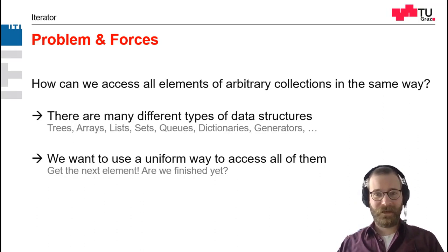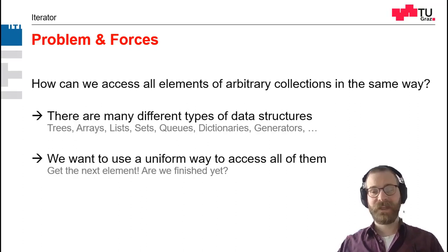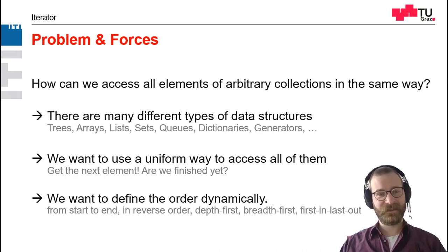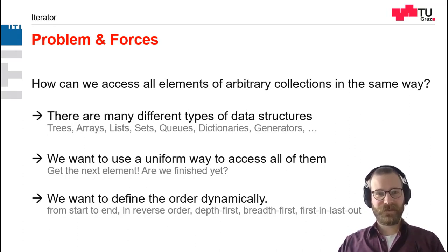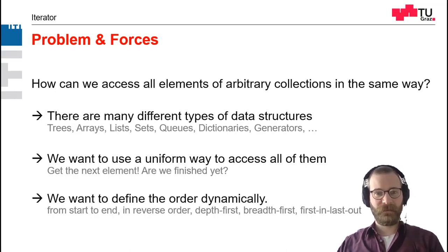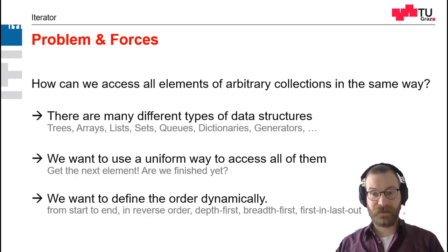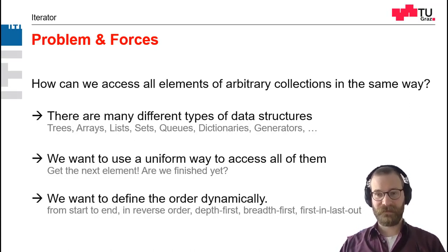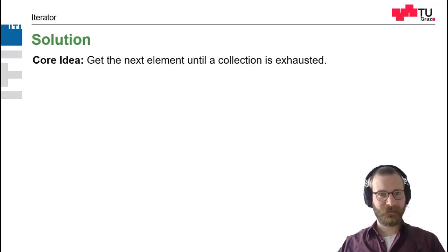This uniform way of accessing has two functionalities: how to get the next element and are we finished yet? Another thing to reconsider is how we want to define the order — maybe from start to end, or in reverse order. Or if you're working on a tree, we want depth-first or breadth-first search. Or we want to simulate a queue and have a first-in-last-out approach. This should be configurable at runtime.